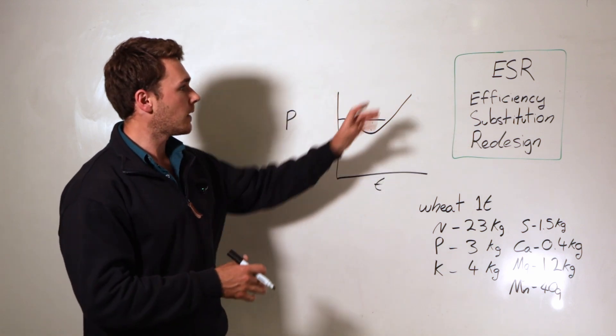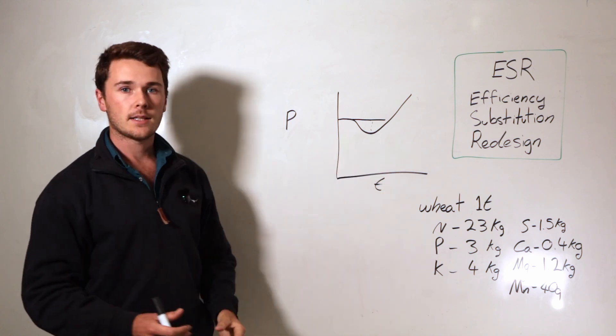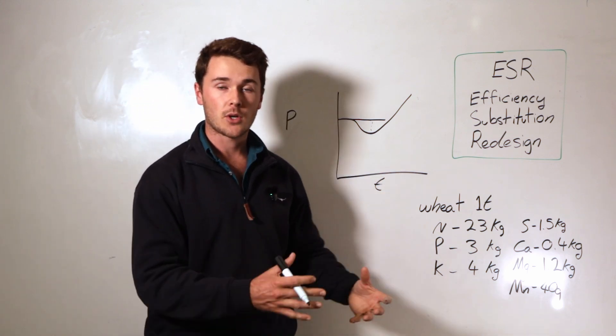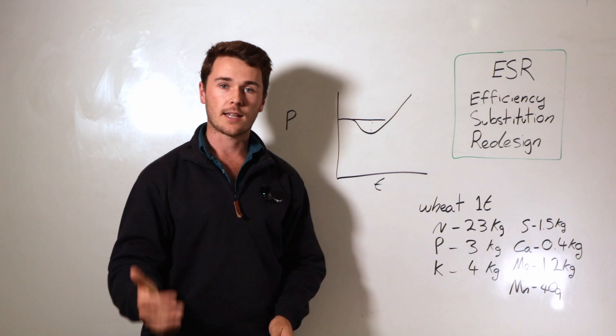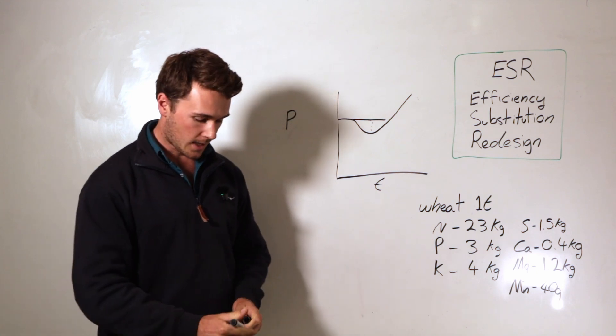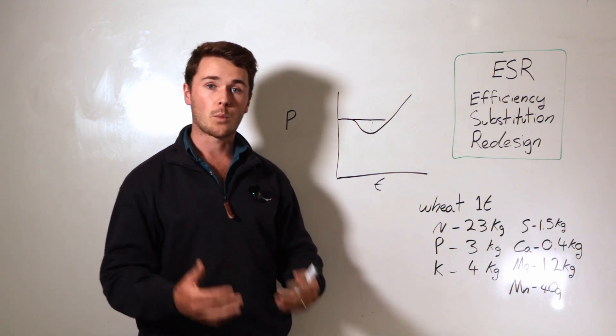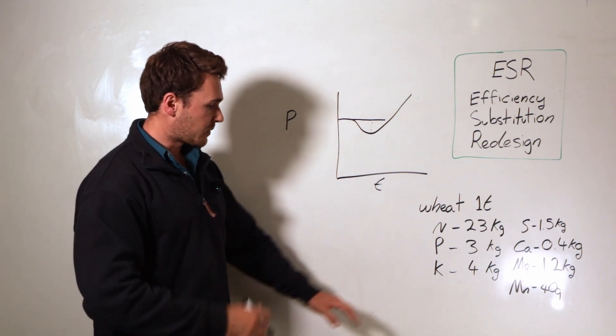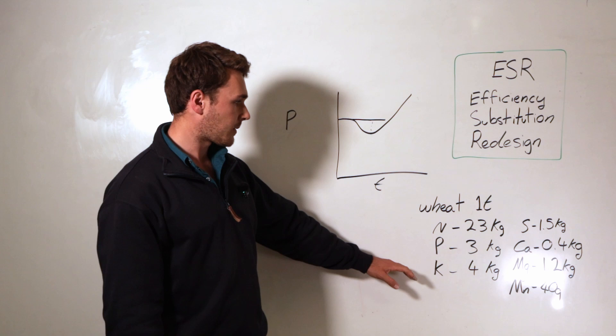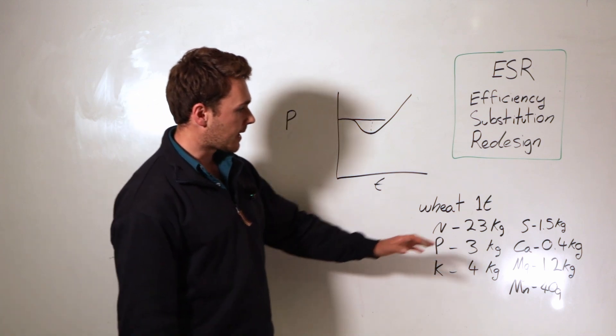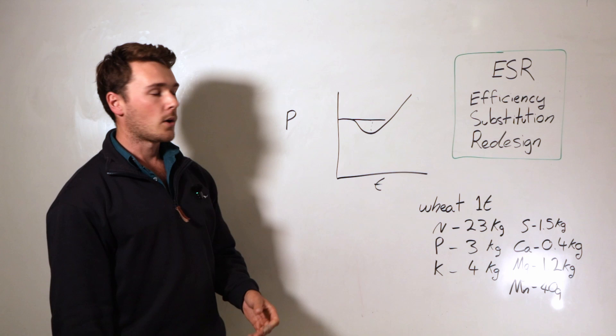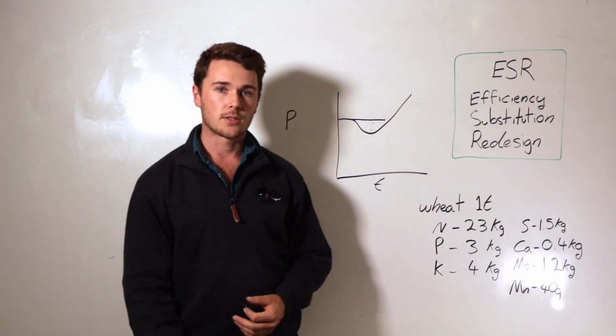That way we can maintain our yields while increasing our efficiencies, allowing us to then take on some of these bigger ideas in regenerative agriculture. Some of the things we use within the efficiency component is the right nutrition at the right times. Go see our critical stages of influencing yield. That's a really good video. It explains exactly what you need at different stages of wheat development. And that comes back to that potassium thing. You don't quite need as much potassium until you get to grain fill. Otherwise, it antagonizes your calcium and you're going to lose yield.